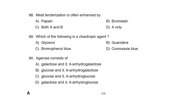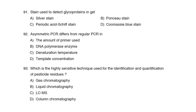89th Question: Meat tenderization is often enhanced by Correct Answer: Option C: A and B. 90th Question: Which of the following is a cryoprotective agent? Correct Answer: Option A: Glycerol. 91st Question: Agarose consists of Option A: Galactose and 3,6-anhydrogalactose. 92nd Question: The stain used to detect glycoproteins in a gel is Option C: Periodic acid-Schiff stain.